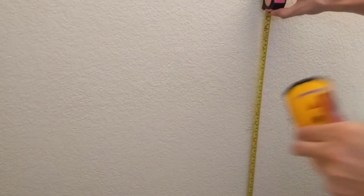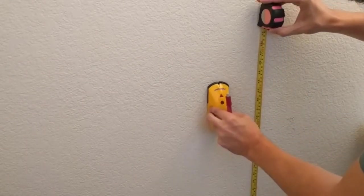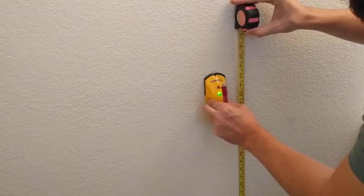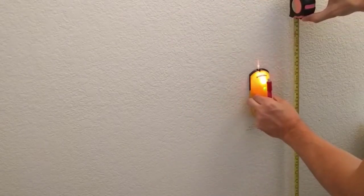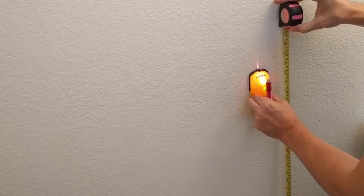Next, I'm going to use a stud finder to locate a stud and a tape measure to mark where the bottom of the towel bar will be. We recommend a minimum of 42 inches. In this case, I am mounting the bar 46 inches from the ground.